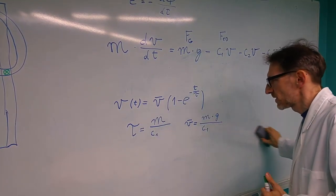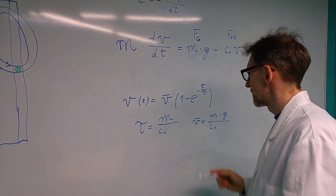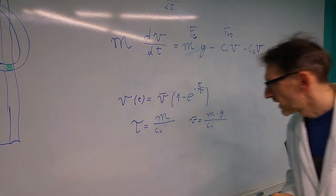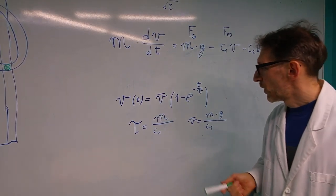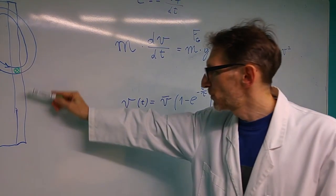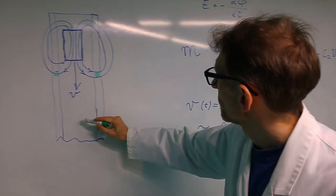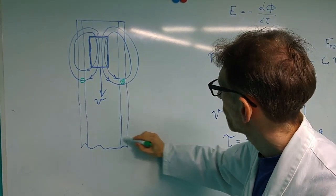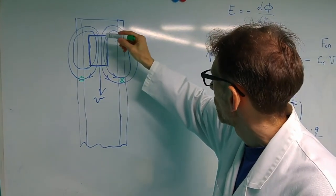It's important to note that both this time constant and the terminal velocity depend on the conductivity of the pipe, on the diameter of the pipe, the thickness of the wall, and the strength of the magnet.